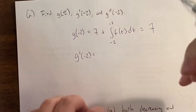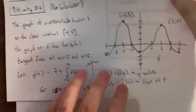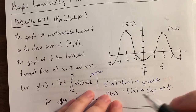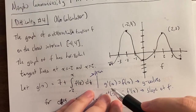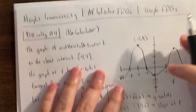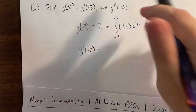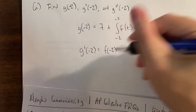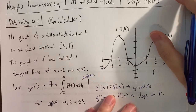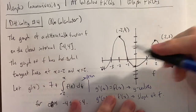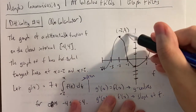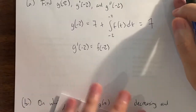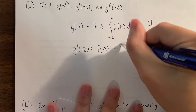G prime of negative 2 is the same thing as f of negative 2, and because we have a graph of f, that's just the y value at negative 2. They labeled it — it's 4. So g prime of negative 2 equals 4.